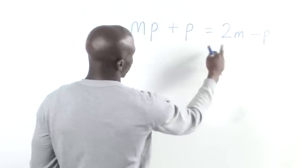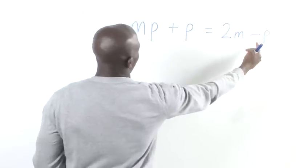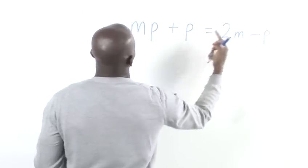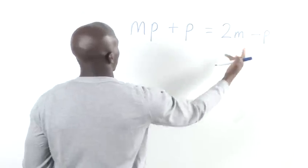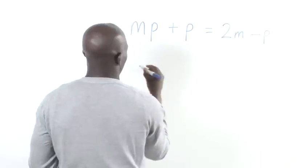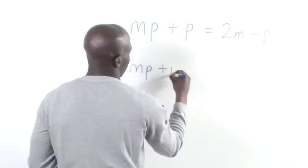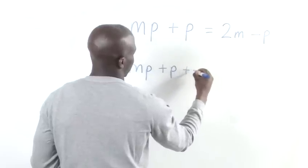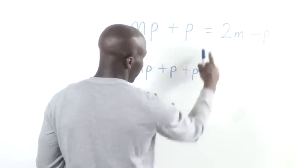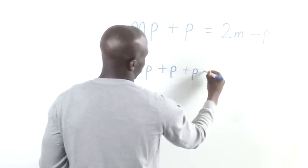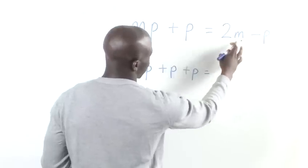If we look at this P, it's a negative, so if we take it over to this side, we're going to change that to a positive, so we've got MP plus P plus P. If we look at the M over here, it's basically 2M.